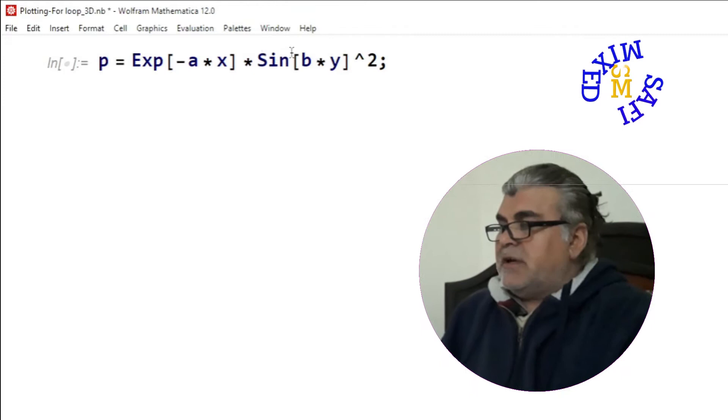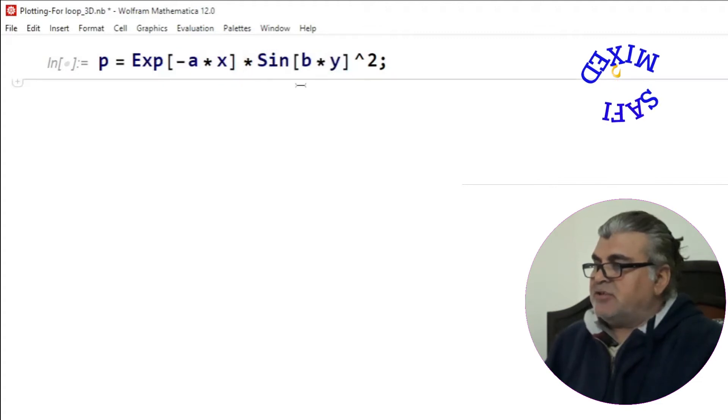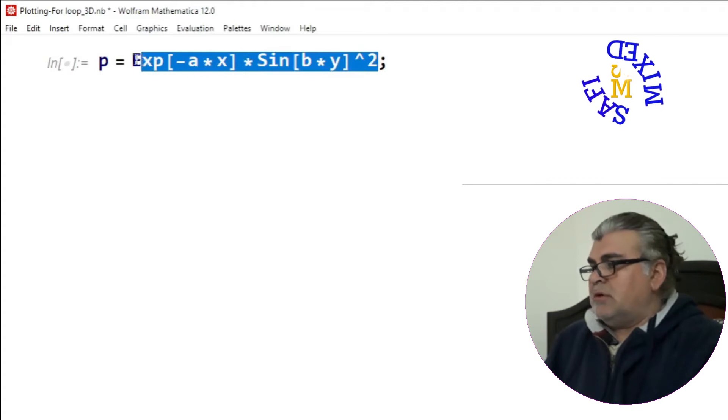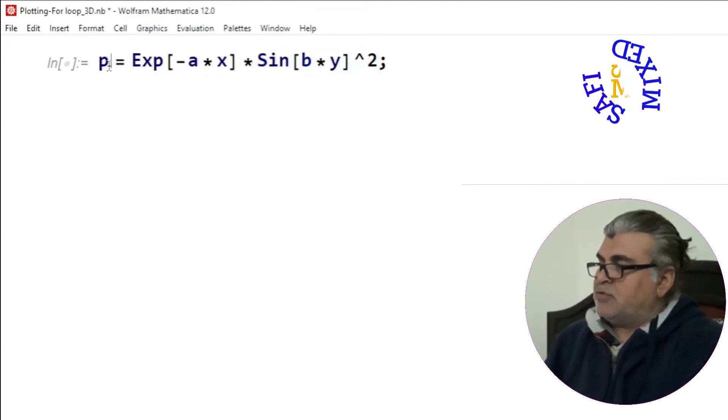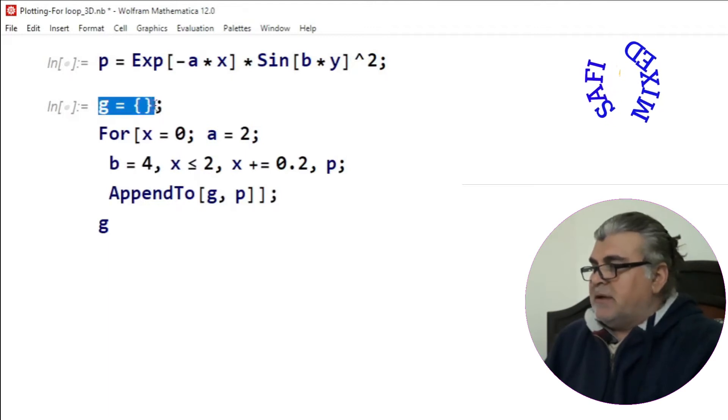So you see here, I want to plot an exponentially decaying sinusoidal function as a function of two variables. Here I'm using x and y, and I'll fix the values of parameters a and b and I'm assigning the whole function to p. Then I generate an empty list and assign the value of the list to g.